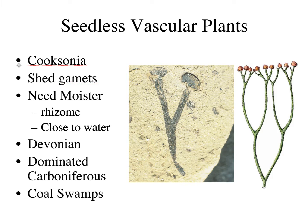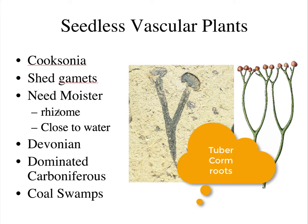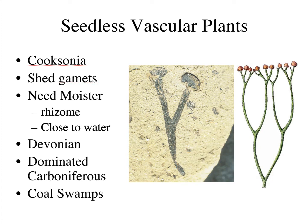For the Seedless Vascular plants, the important fossil is Cooksonia. Cooksonia had spores only at the top, which needed to shed its gametes into an aqueous environment because the sperm needed to travel in moisture to get to the ovules. These plants often had a root-like rhizome — like a tuber or a corm — to supply water to the plant. Based on the sedimentary rocks where Cooksonia is found, these are muddy, wet bottoms, so it must have been a wet environment. Cooksonia plants are Devonian, but by Carboniferous time these Seedless Vascular plants really dominated, eventually becoming the main Carboniferous coal deposits — the coal swamps.